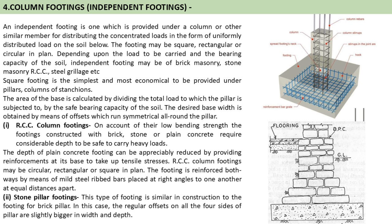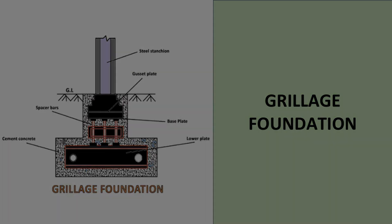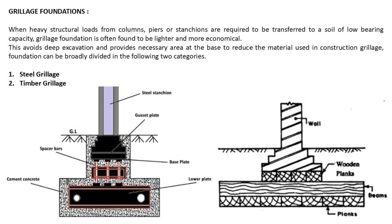Stone pillar footing is similar in construction to the footing for a brick pillar; in this case the regular offsets on the four sides of the pillar are slightly bigger than the width and depth. Now let's learn about grillage foundation. There are two types: steel grillage and timber grillage. When heavy structural loads from columns, piers, and stanchions are required to be transferred to soil of low bearing capacity, grillage foundation is often found to be lighter and more economical. This avoids deep excavation and provides the necessary area at the base to reduce the material used in construction.